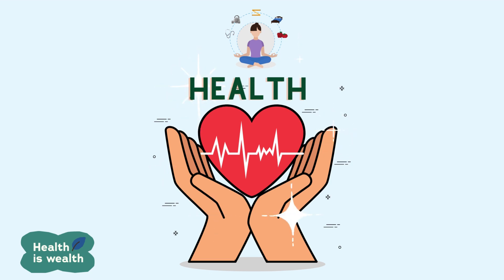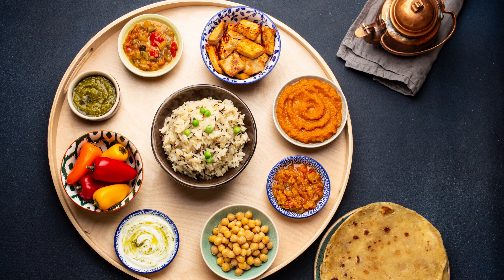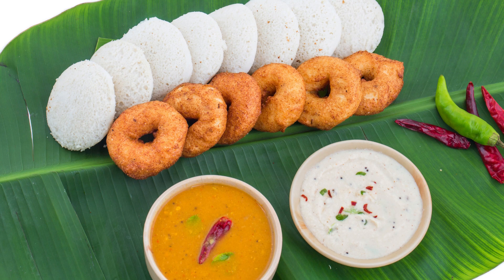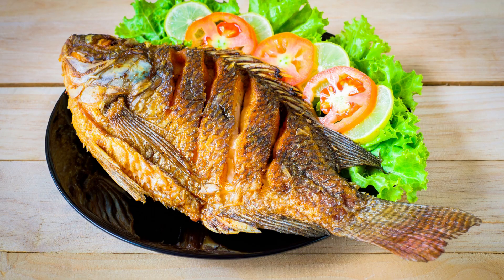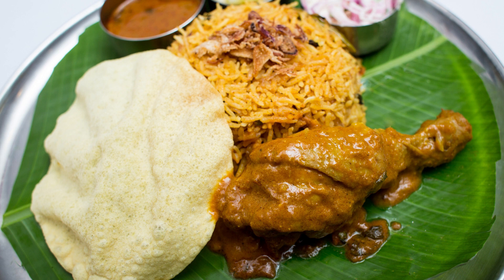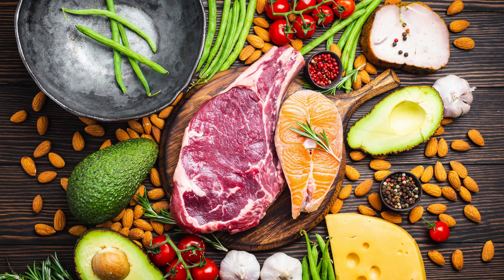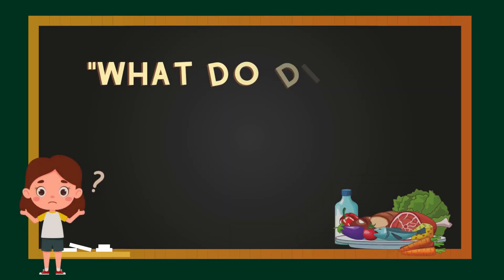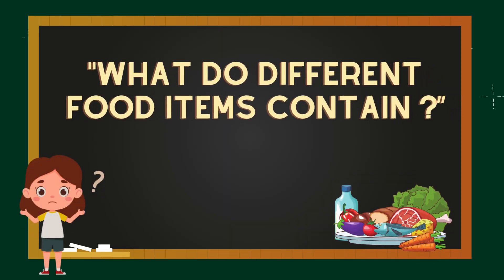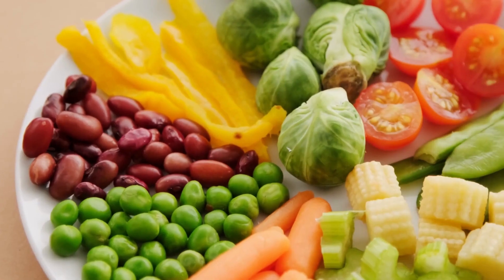To understand this better, let's start by looking at a typical meal. A meal could consist of chapati, dal, curry; another may be rice, sambar, idli or fish curry, chicken, etc. A balanced meal consists of different food items, each contributing essential components to our diet. But what are these components and what do different food items contain?